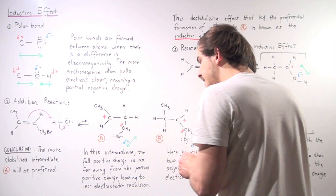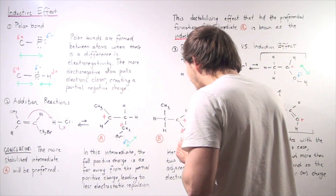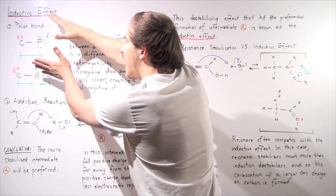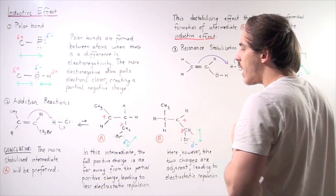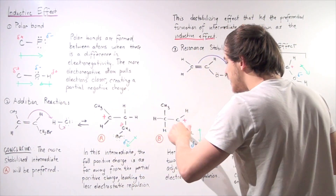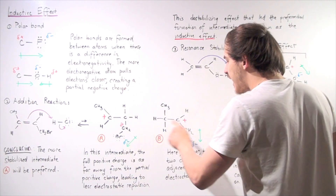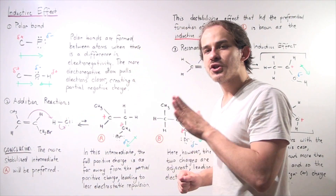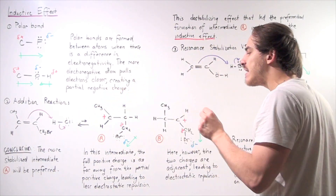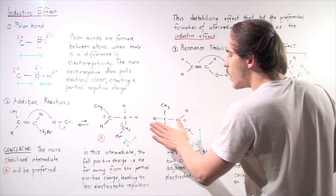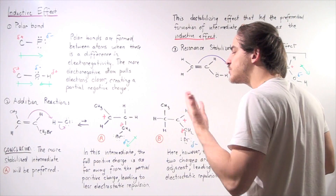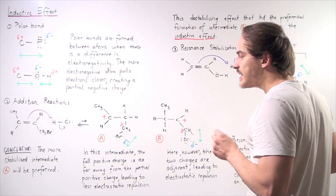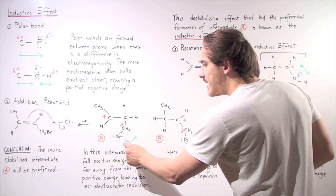Which of these intermediates is more stable? The answer lies in an examination of the charge distribution. Recall what a polar bond is and apply that here. In both molecules, we have bromine attached to carbon. Bromine is much more electronegative than carbon, so we have a polar bond between bromine and carbon in both cases, giving a partial negative on the bromine and a partial positive on the carbon.